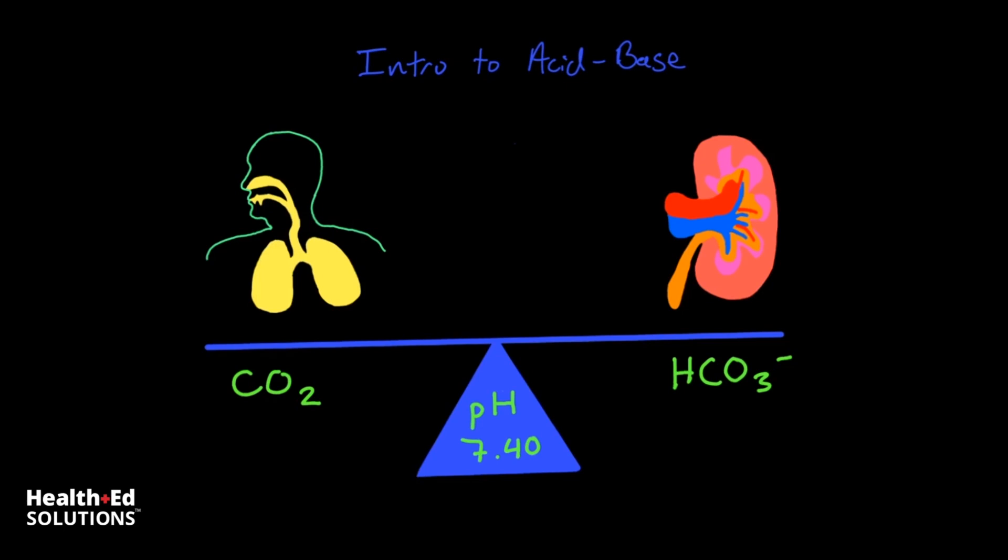You'll find many videos online that teach ABGs using mnemonics and other tricks that help you remember how to tell whether an ABG reflects a respiratory acidosis or a metabolic alkalosis. Those of you who know my videos know that I'll take a different approach.